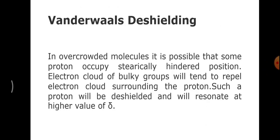Next is van der Waals deshielding. This happens due to steric hindrance — when bulkier groups are nearby, they get deshielded and as a result the delta value will be more. Due to electrostatic repulsion, this deshielding happens. The electron cloud of bulky groups tends to repel the electron cloud surrounding the proton, such that the proton is deshielded and resonates at a higher delta value, requiring higher energy to transition from alpha state to beta state.